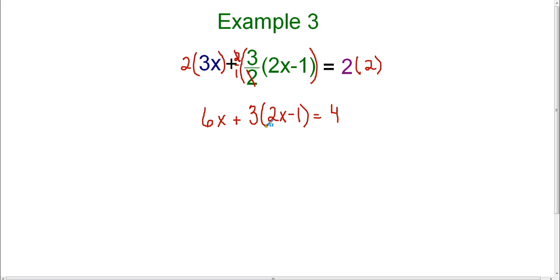I know that my next step is to distribute, since I have parentheses. So I'm going to bring down the 6x, and I'm going to go ahead and distribute the 3 throughout the parentheses. So 3 times 2x is 6x, and 3 times negative 1 is negative 3, and that's going to equal 4.